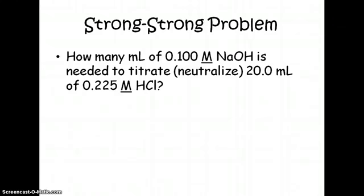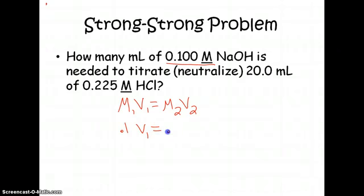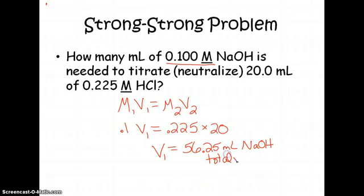So let's look at this one and try to draw a titration curve. So here we are asked how many milliliters of 0.1 molar NaOH is needed to titrate or neutralize 20 milliliters of 0.225 molar HCl. So basically we're looking at an M1V1 problem. So this is the first concentration. So we have 0.1 and we're looking for the volume of that that we would need to neutralize this second concentration of HCl and we have 20 mils of it. So when we work this out and solve for V1, I get 56.25 milliliters of NaOH would be needed. So that's the total volume to get to equivalence.